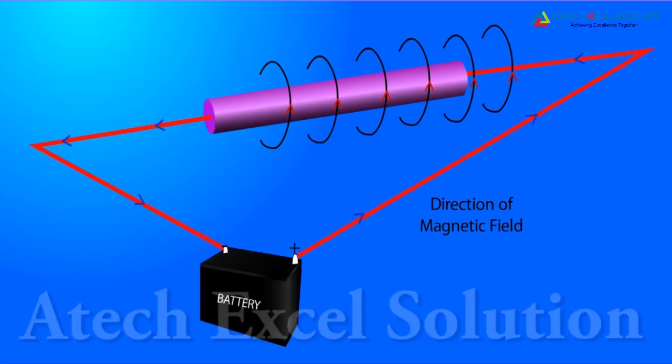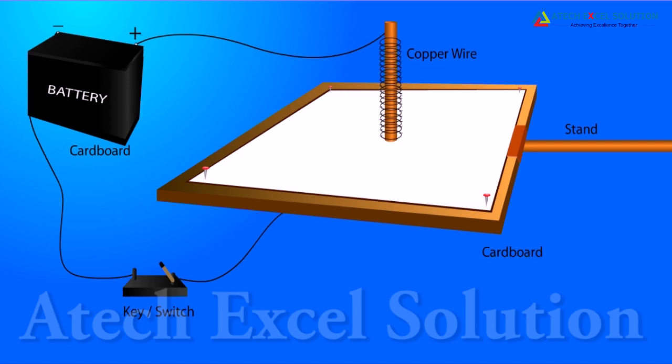Electric current through metallic conductor produces magnetic field around it. However, the pattern of magnetic field produced depends on the shape of the conductor. We will find the pattern of magnetic field in case of straight conductor.